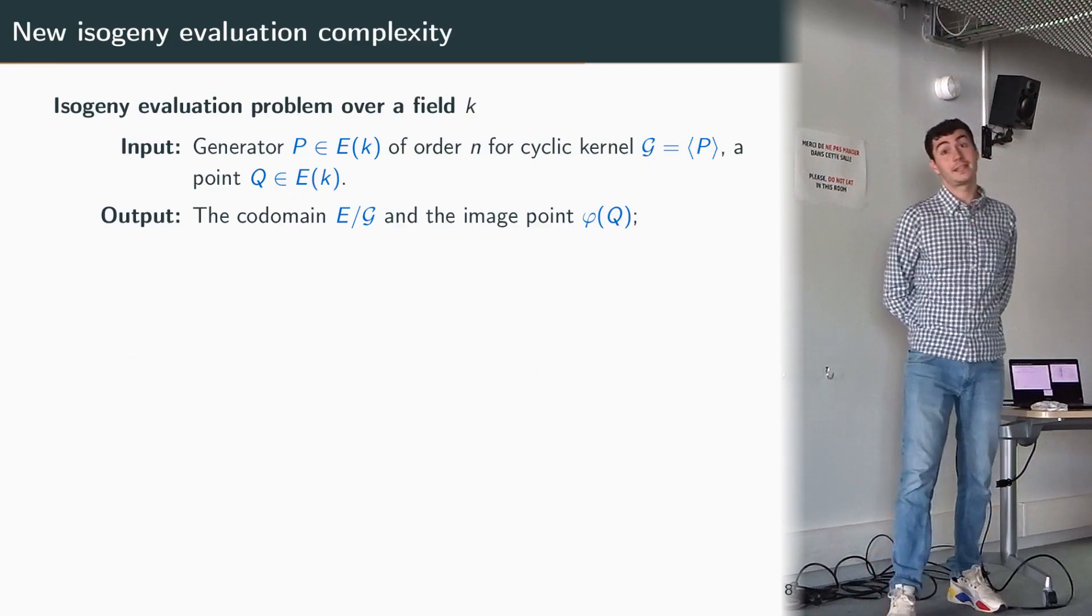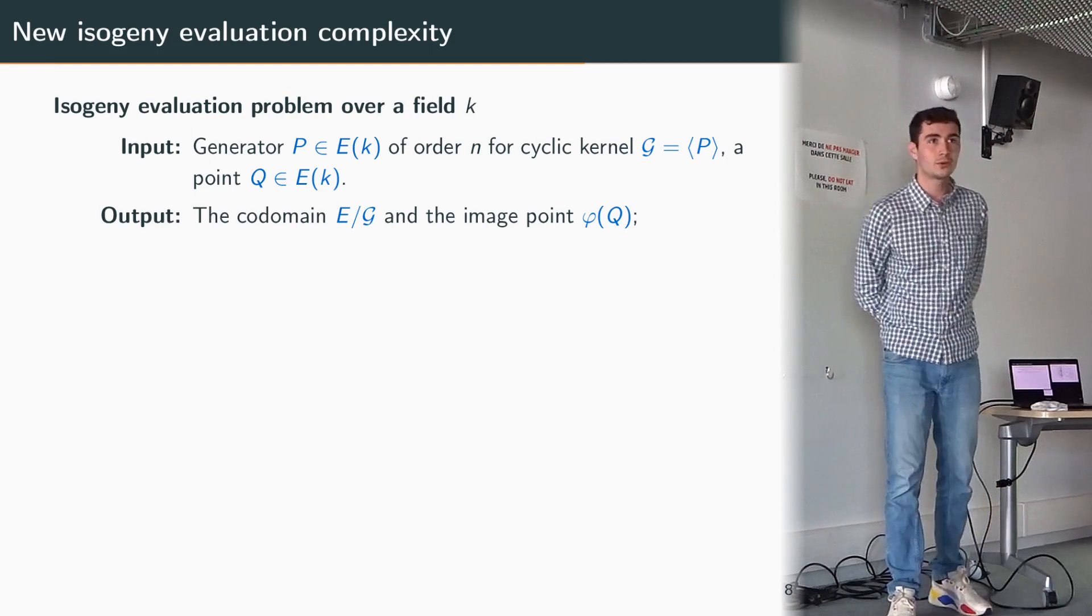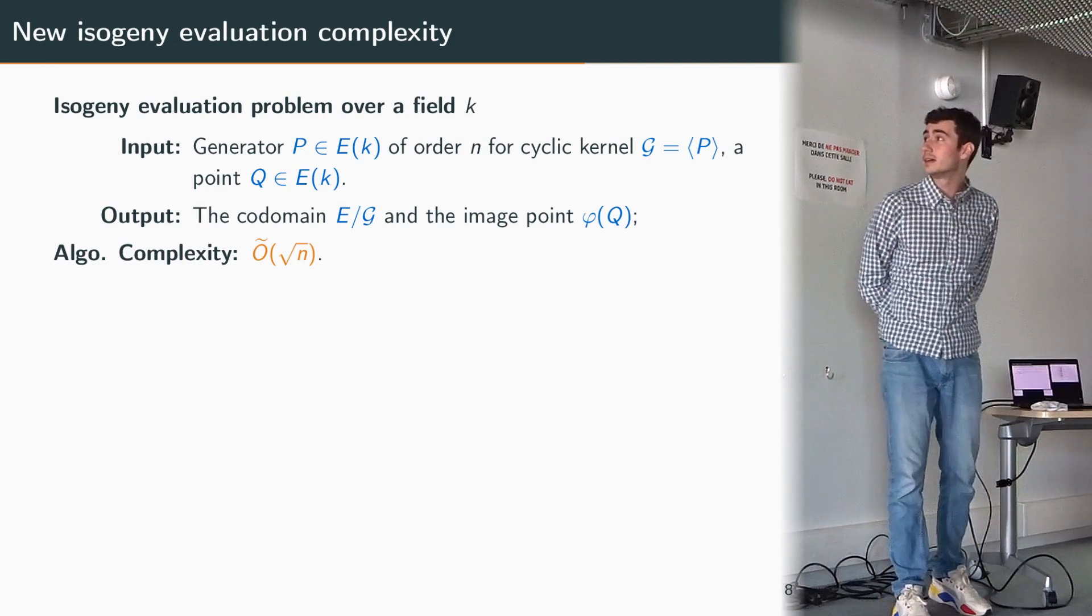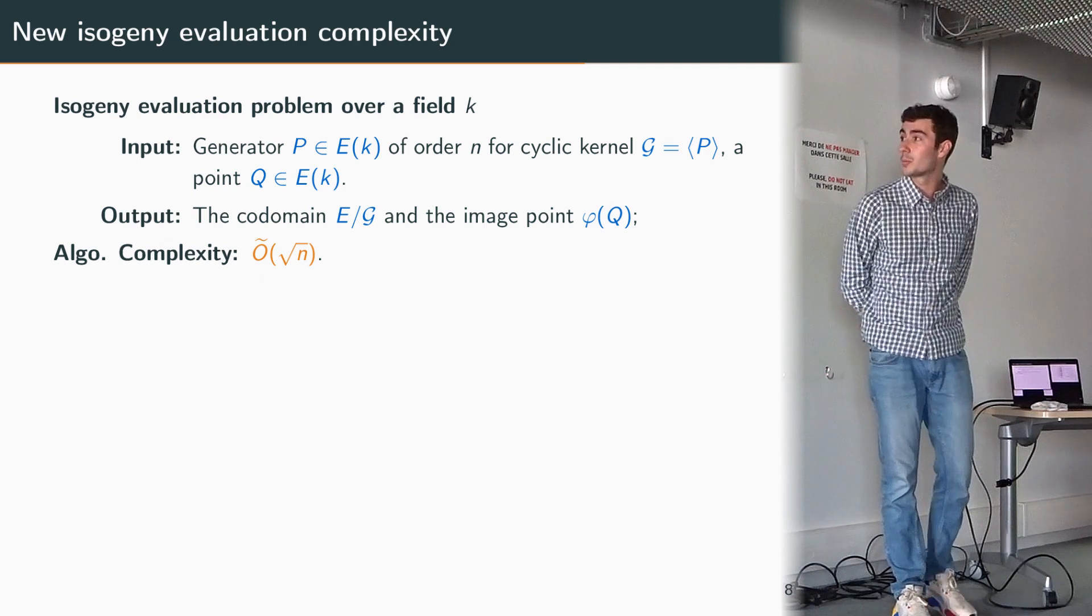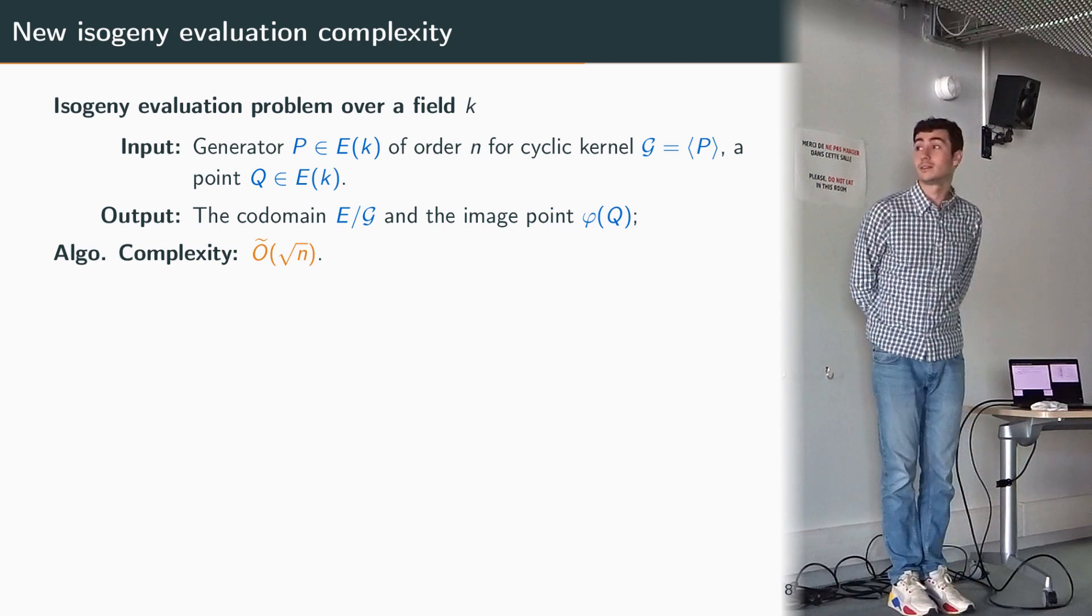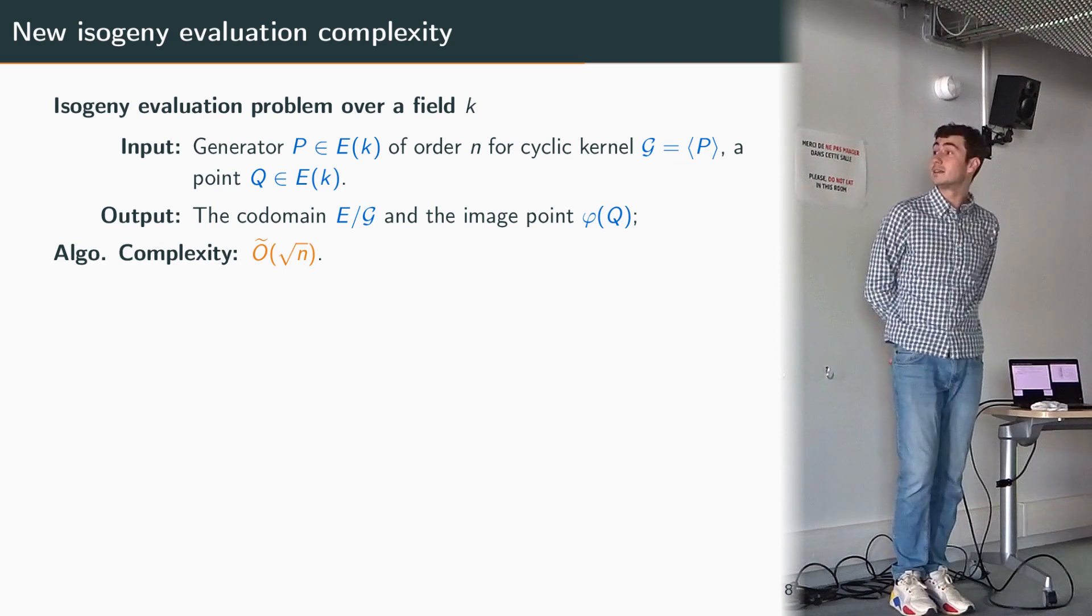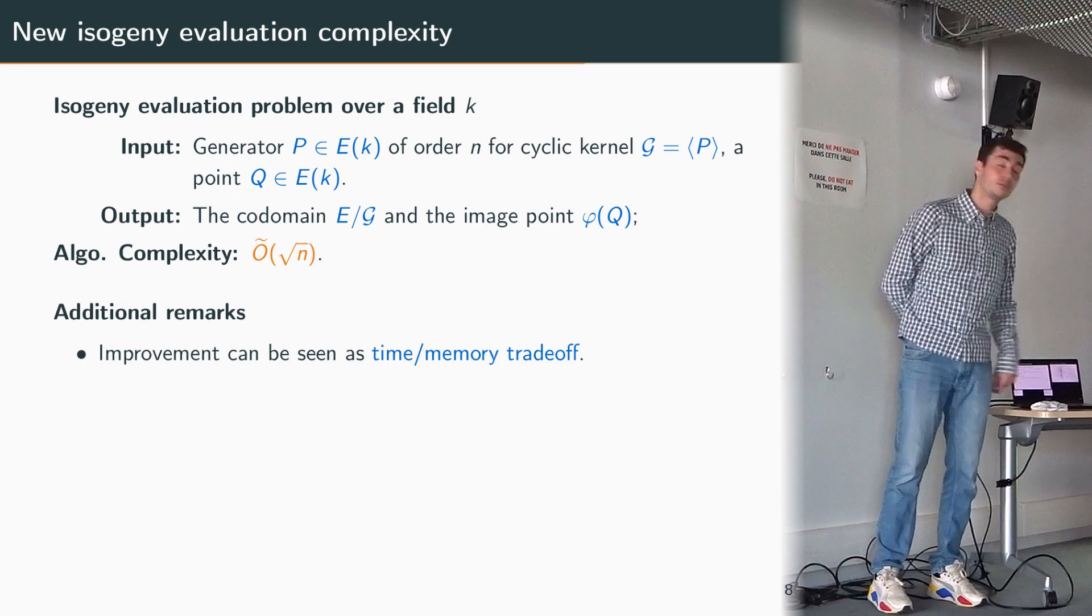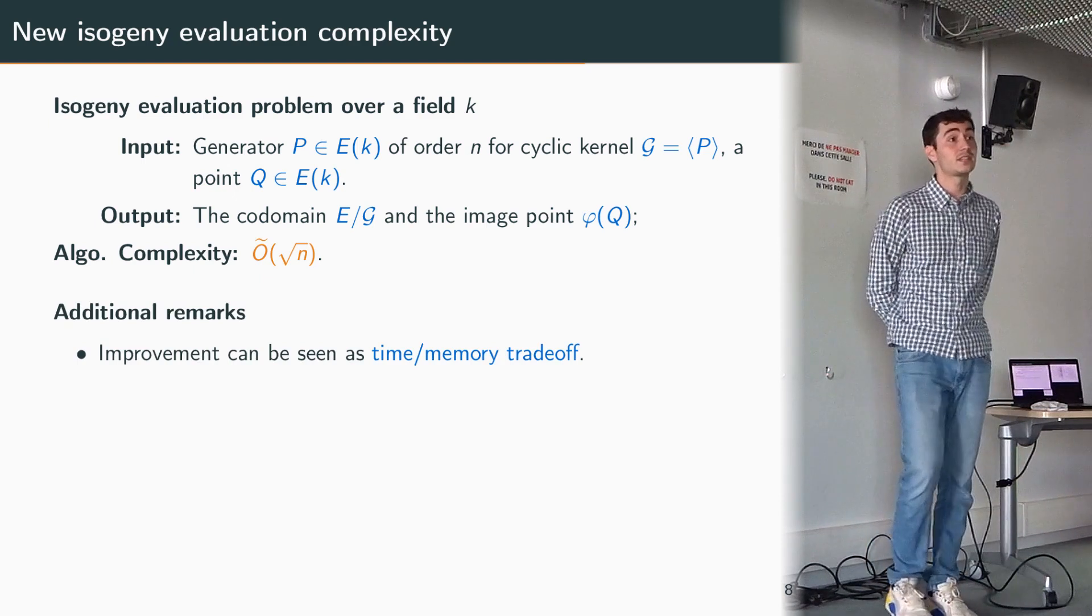So now that I have my algorithm to evaluate efficiently my kernel polynomial, as I said earlier this means that I can solve my isogeny evaluation problem with the same complexity. So this is a nice improvement compared to the linear complexity that we had earlier.